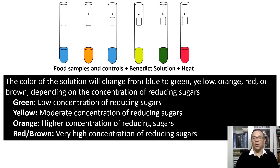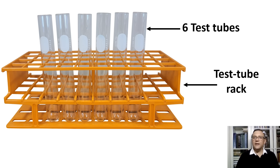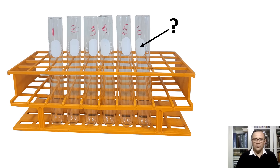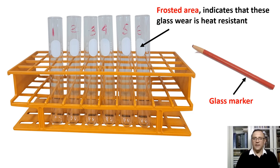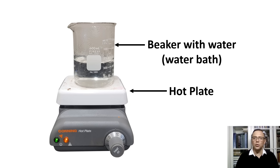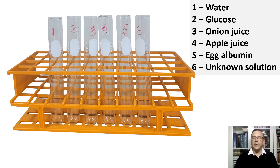Now that we have covered the working principle of this test, let's proceed with the actual experiment. We will obtain a test tube rack and six test tubes. Note that these tubes have special frosted markings — they are heat resistant and not meant for writing on. Using a glass marker, I wrote the numbers of our test tubes above the frosted area, not on it. Before we add the solutions, let's set water to boil in a large beaker on the hot plate at the highest temperature so the water will boil quickly.